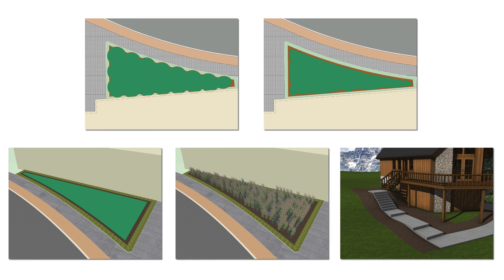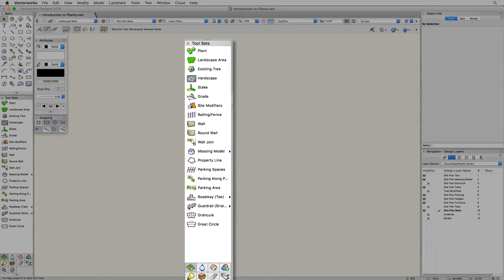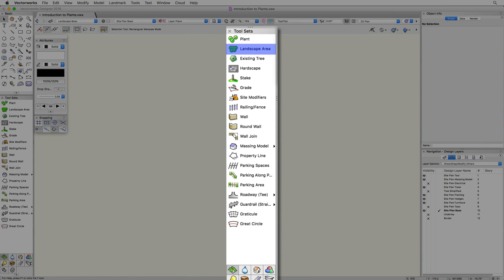Landscape areas have various 2D and 3D display options, from a simple 2D-only representation to 3D plants or even a texture bed on a site model. The landscape area tool is located in the site planning toolset.